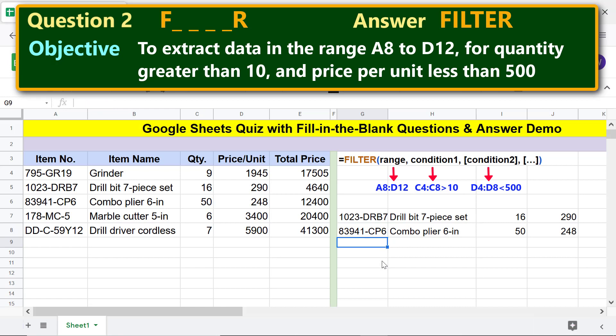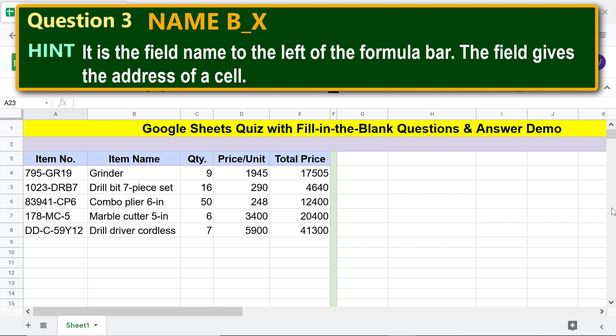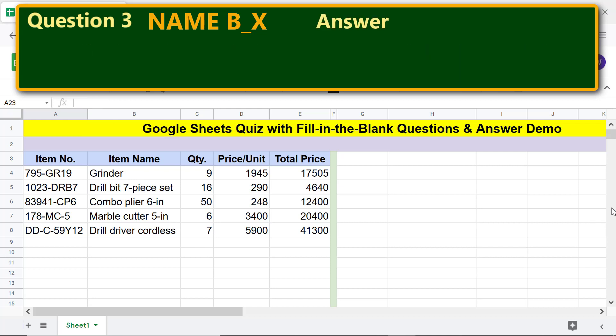There you go, here is the extracted data. Question 3. Hint: it is the field name to the left of the formula bar. The field gives the address of a cell. The answer is name box.